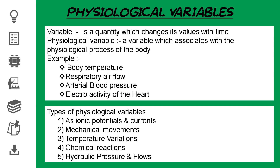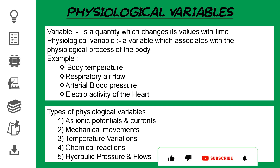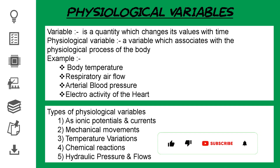There are many physiological variables used in clinical medicine, such as body temperature, respiratory airflow, electroactivity of the heart, arterial blood pressure, etc. Examples of the forms of physiological variables include ionic potentials and currents, mechanical movements, temperature variations, chemical reactions, hydraulic pressure and flows.